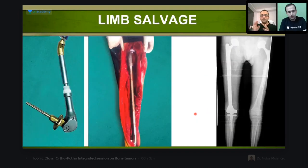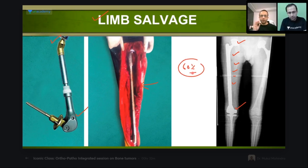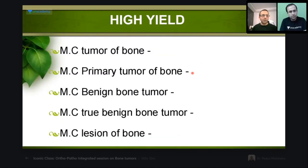This megaprosthesis has a hip joint and a knee joint — replacing the entire femur. Five-year survival rates are now up to 60% with this approach of good chemotherapy and megaprosthesis. The commonest tumor of bone overall is actually metastasis. The commonest primary tumor of bone is multiple myeloma. The commonest benign tumor is osteochondroma, though some call it a lesion. If the examiner uses 'true benign tumor,' the answer becomes osteoid osteoma. The commonest lesion of bone is fibrous cortical defect.